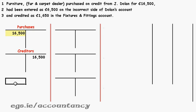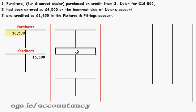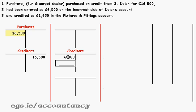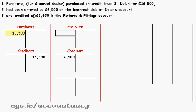What did they do? They entered it as 6,500 on the wrong side of Dolan, the creditor's account — so they used the creditor's account but entered it on the wrong side, the left rather than the right, and that's the wrong amount: 6,500. They also put it into fixtures and fittings, on the credit — the right-hand side — as 1,650.